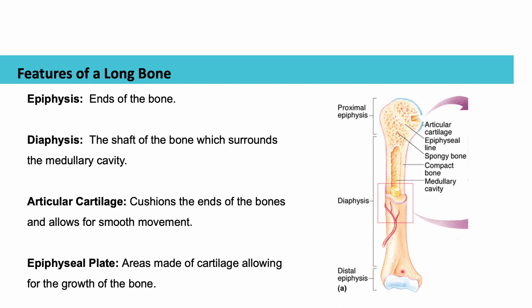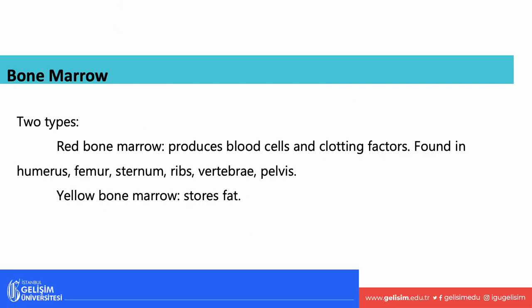As far as bone marrow goes, there are two types: red bone marrow and yellow bone marrow. Red bone marrow produces blood cells and clotting factors. We find red bone marrow in the long bones — the humerus and femur — as well as flat bones such as your sternum and ribs, and in irregular bones such as vertebra and pelvis. Yellow bone marrow is what's storing the triglyceride — it's storing fat. You find yellow bone marrow in the medullary cavity of the long bones.